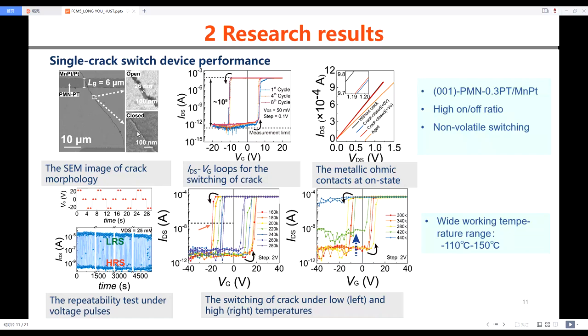In order to confirm the metallic contacts at the closed state, we compare the on-currents before and after the crack is induced. Comparing the black and blue lines, a small difference indicates the metallic contacts even after the crack is induced. Also, our device shows good stability under voltage pulses and a wide working temperature range.